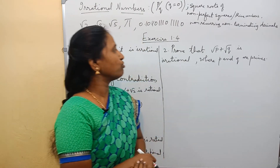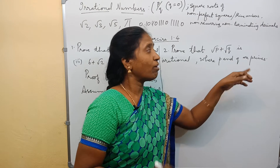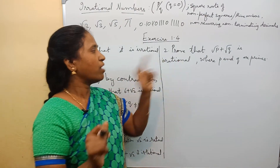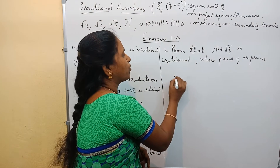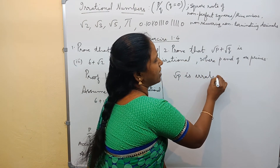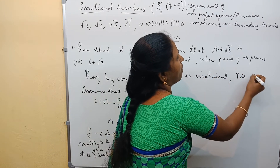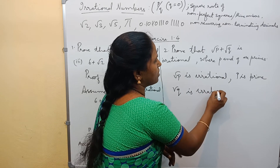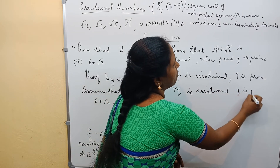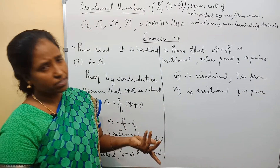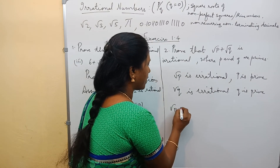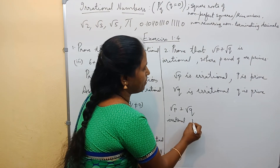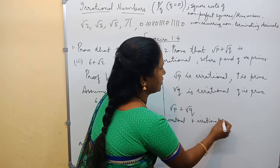Prove that root p plus root q is an irrational number, where p and q are primes. The square roots of prime numbers are irrational. Now, we are given p and q are prime numbers. So, we know root p is irrational because p is prime. And root q is again irrational because q is a prime number. Square roots of prime numbers are irrational — this is a known fact. So, root p plus root q is irrational plus irrational.